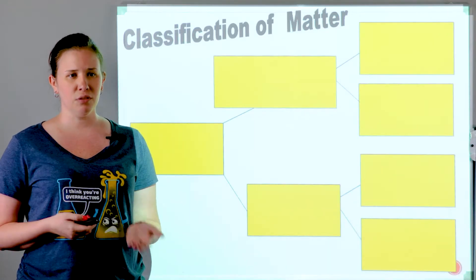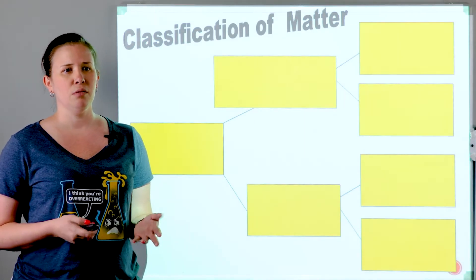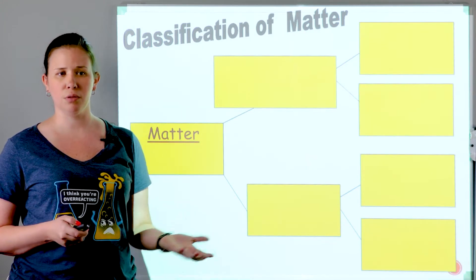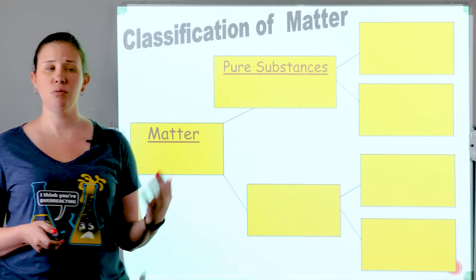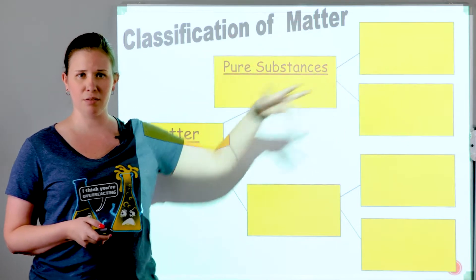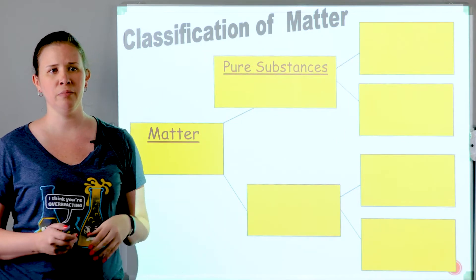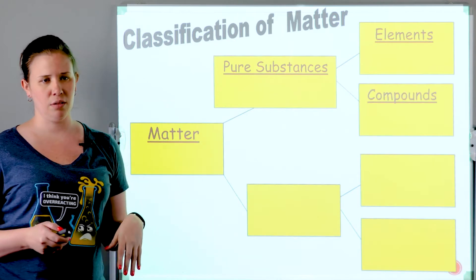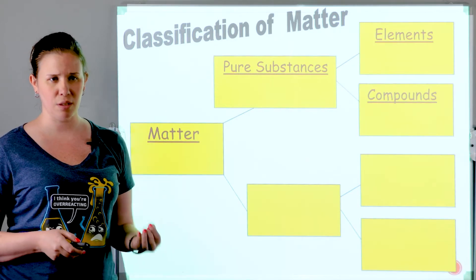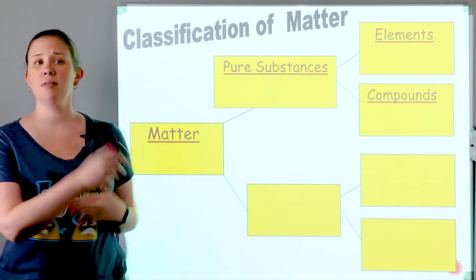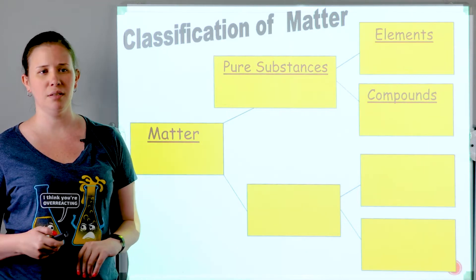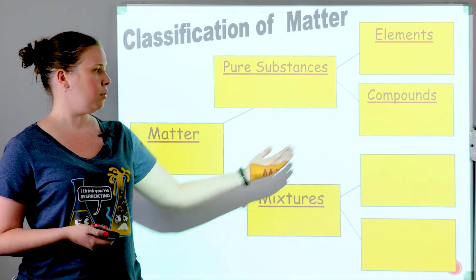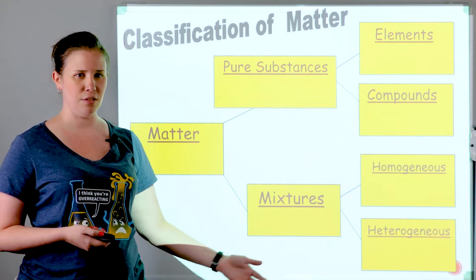There are several different categories of matter. Matter branches off into two main ones: the first is called a pure substance. There are two different types of pure substances — we could have elements or we could have compounds, and either one would classify as a pure substance. But we could also mix together some pure substances and get something called a mixture, and there are two types of mixtures: homogeneous and heterogeneous.